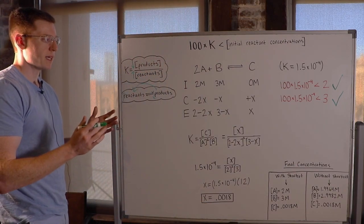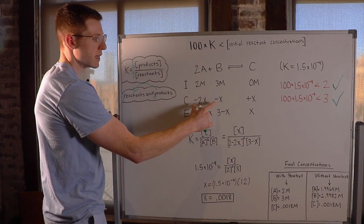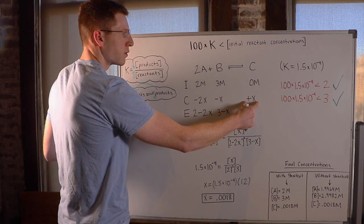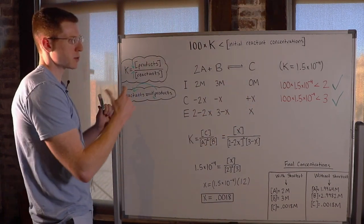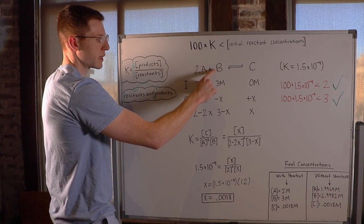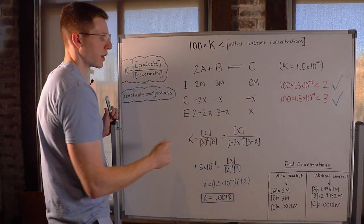So let me show you what that means. So again, in our C row, we're going to have negative X terms for our reactants and positive X terms for our products. And since we have a coefficient of 2 here, it's going to be minus 2X. Coefficient of 1 here, it's going to be minus X. Coefficient of 1 here, it's going to be plus 1X.